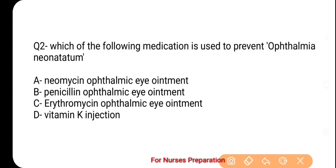Question number 2 is: which of the following medication is used to prevent Ophthalmia Neonatorum? निम्न में से कौन सी medication का उपयोग Ophthalmia Neonatorum की prevention के लिए किया जाता है? Options हैं — A. Neomycin Ophthalmic Eye Ointment, B. Penicillin Ophthalmic Eye Ointment, C. Erythromycin Ophthalmic Eye Ointment, D. Vitamin K Injection.